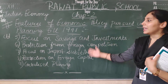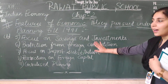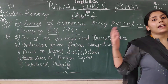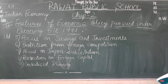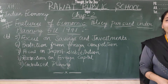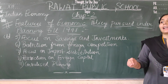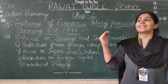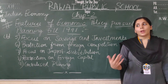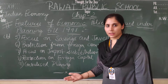So these were the features of the economic policy till 1991. We have covered the features up to 1991. The next topic will be the success of planning — to what extent we have reached success after planning and implementing these policies. We will discuss that in the next topic. That is all for today.